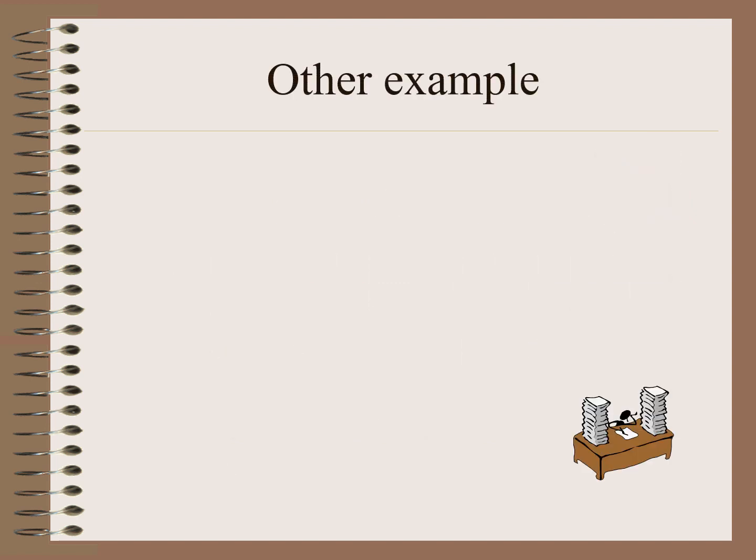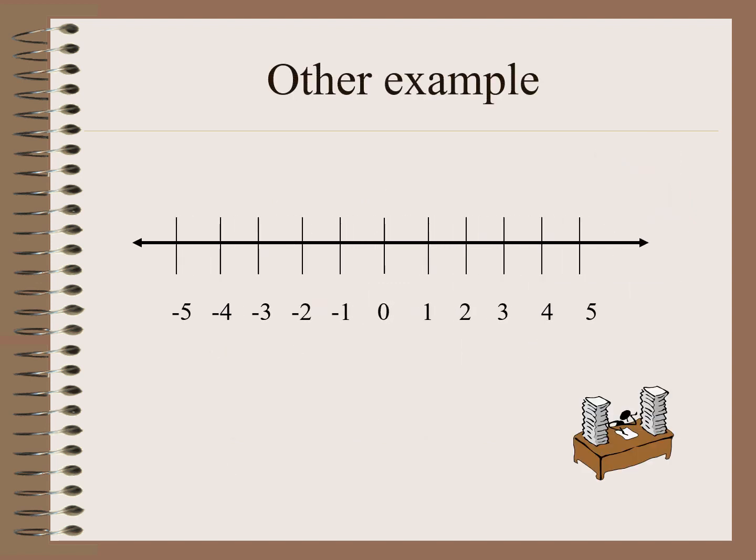Now let us have another example. Supposing we have the inequality x is greater than negative 2 — all real numbers greater than negative 2. We are going to use an open dot, and then the direction is to the right because it is greater than.